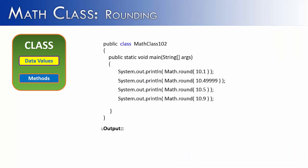The third rounding method of the Math class is round. Round rounds up at 0.5 and rounds down at 0.4 and below. We call this ties rounding. So we have four examples here: 10.1, 10.4999,